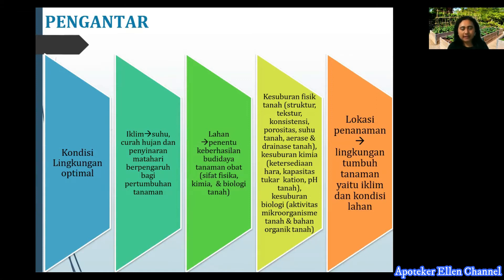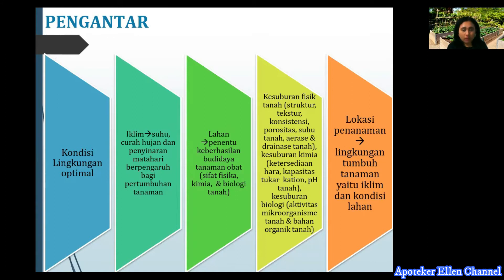Tentu saja adalah lahan. Lahan yang terbatas di dalam suatu rumah sangat berpengaruh terhadap proses pembudidayaan toga. Lahan di sini yang dimaksud adalah penentuan keberhasilan budidaya tanaman obat dilihat dari sifat fisika, kimia, dan biologi dari tanah itu sendiri. Faktor lain adalah kesuburan fisik tanah: struktur, tekstur, konsistensi, porositas, suhu tanah, air, dan drainase. Selain itu ada kesuburan kimia seperti ketersediaan hara, kapasitas tukar, dan pH tanah. Yang terakhir ada kesuburan biologi yaitu aktivitas mikroorganisme tanah dan bahan organik tanah.